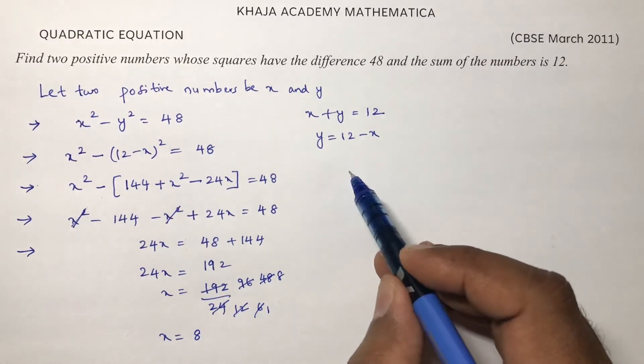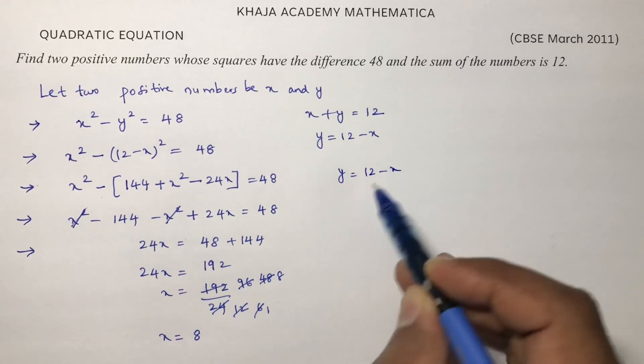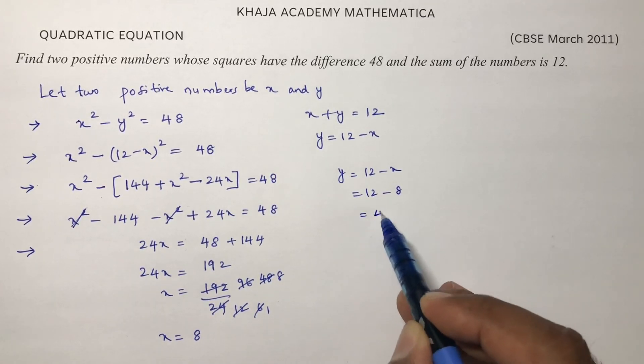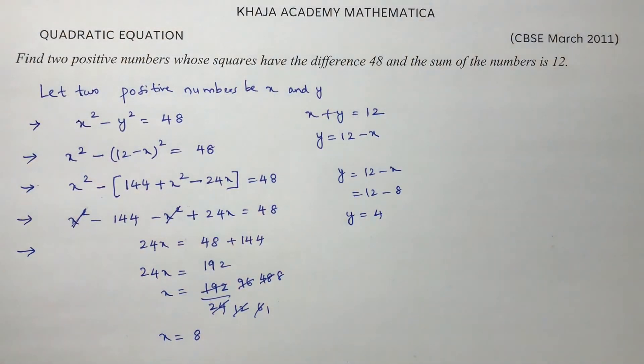So one number is 8. The other number is 12 - x, so 12 - 8 is 4. The two numbers are 8 and 4.